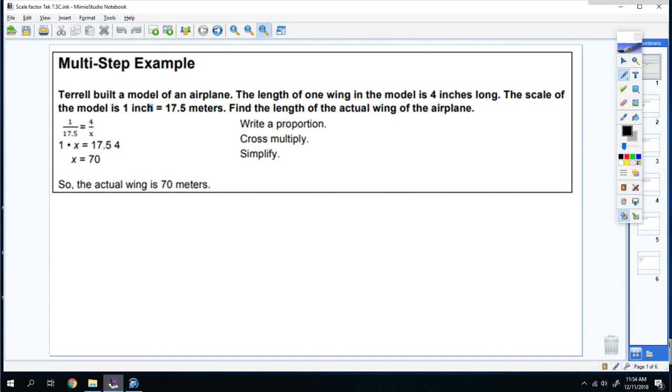So it says Terrell built a model of an airplane. The length of one wing of the model is four inches long. The scale of the model is one inch for every 17.5 meters. Find the length of the actual wing of the airplane. So your first proportion you would write is one inch over 17.5 meters.